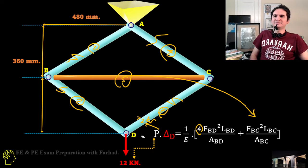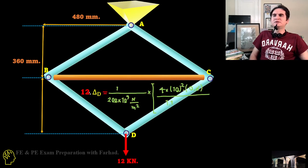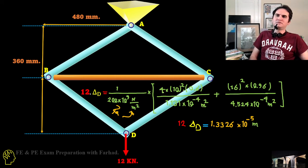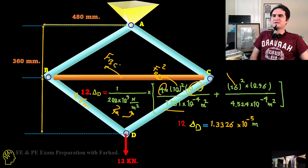Placing P by 12 kilonewton, if you place the numeric value, it just says 12 times delta D is equal to 1 over E, which is 200 giga is 10 to 9, and Pascal is nothing but newton over meter squared. If you place all the four members, that's F squared, for example BD squared times the length of BD, which is 0.6 meter over area, plus 16 which is FBC, which is 16 kilonewton.